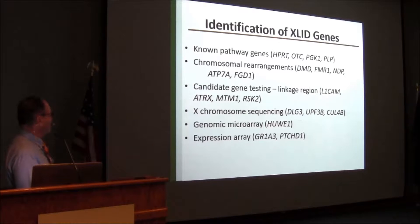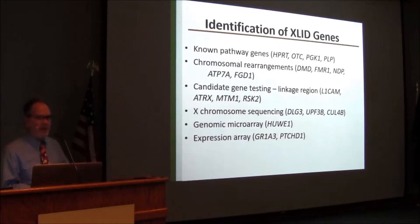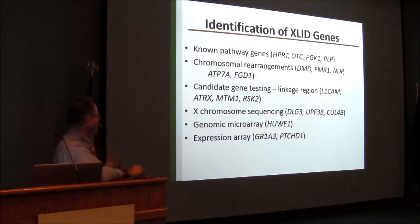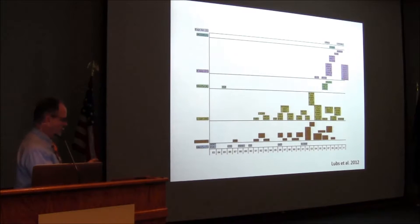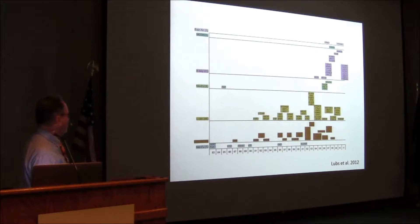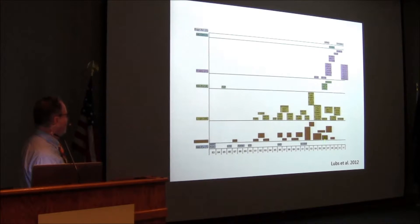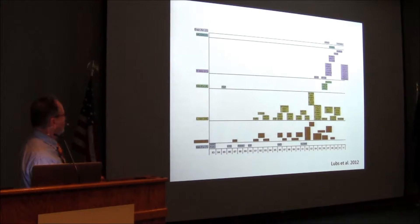Then we progressed to X chromosome sequencing, and a lot of genes were identified that way. Genomic microarray picks up deletions and duplications — that's how HUWE1 was identified. An expression array approach has not been as productive as we would like; very few genes were identified that way. So you're still left with X sequencing or sequencing of genes in the candidate region.